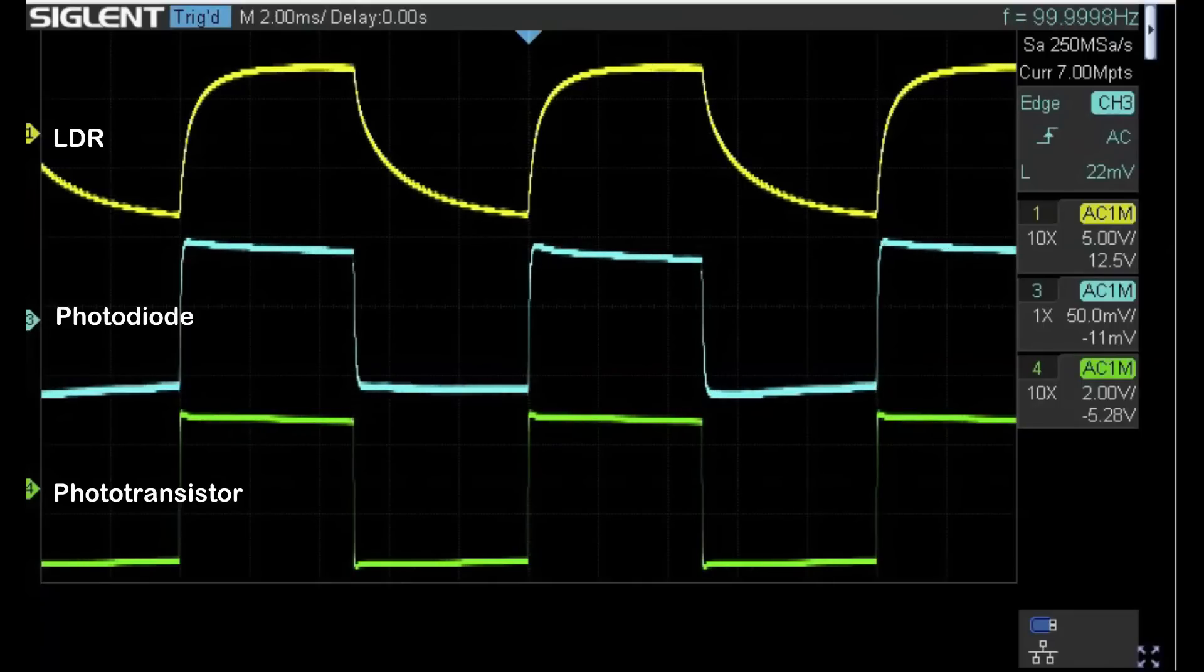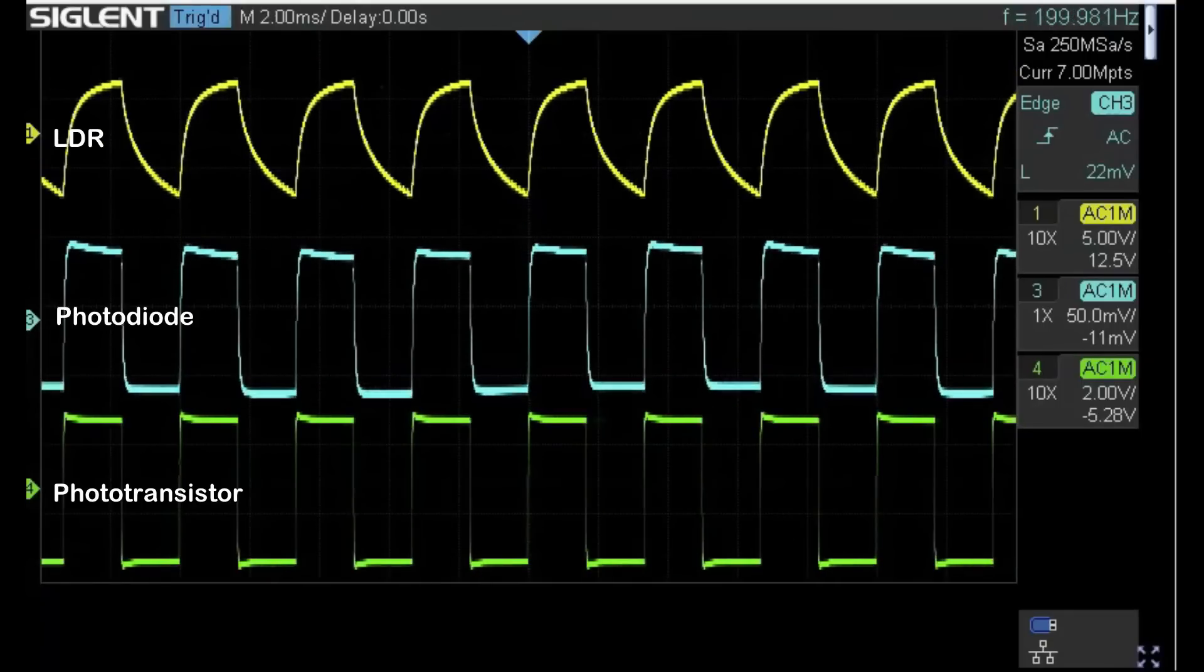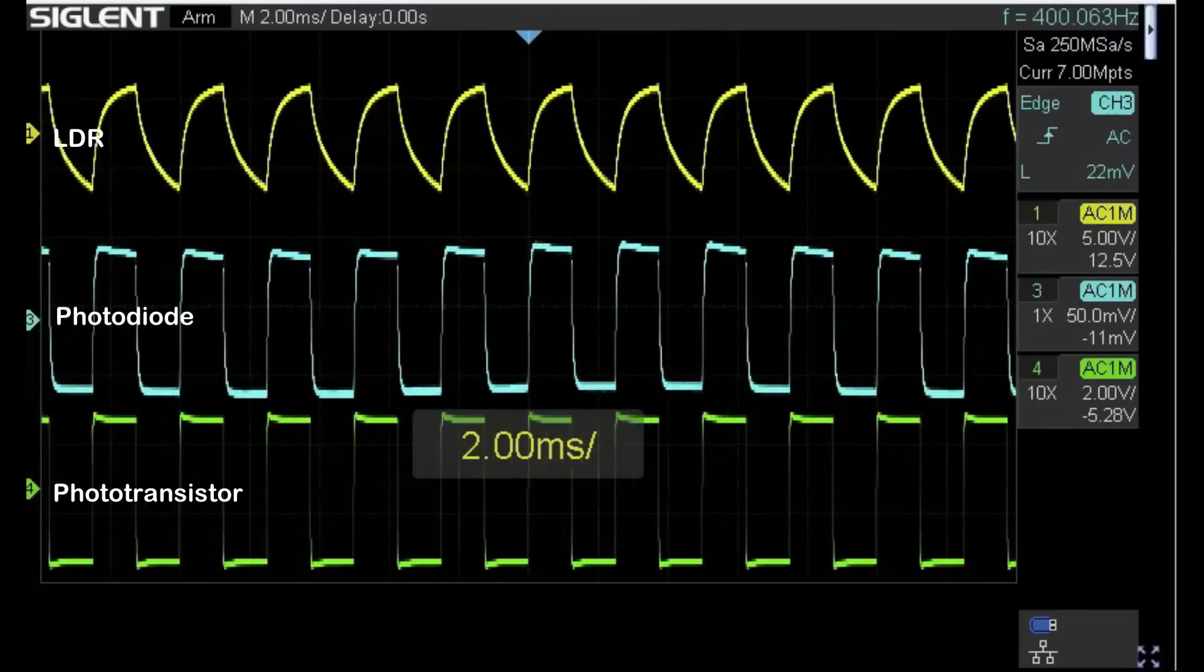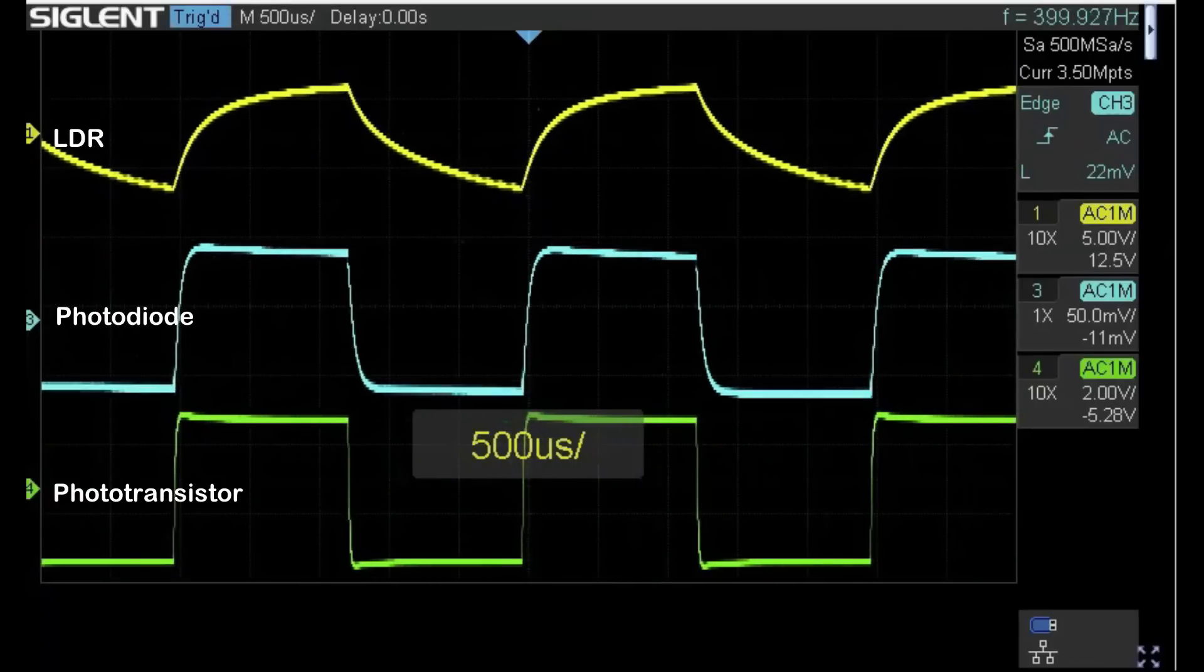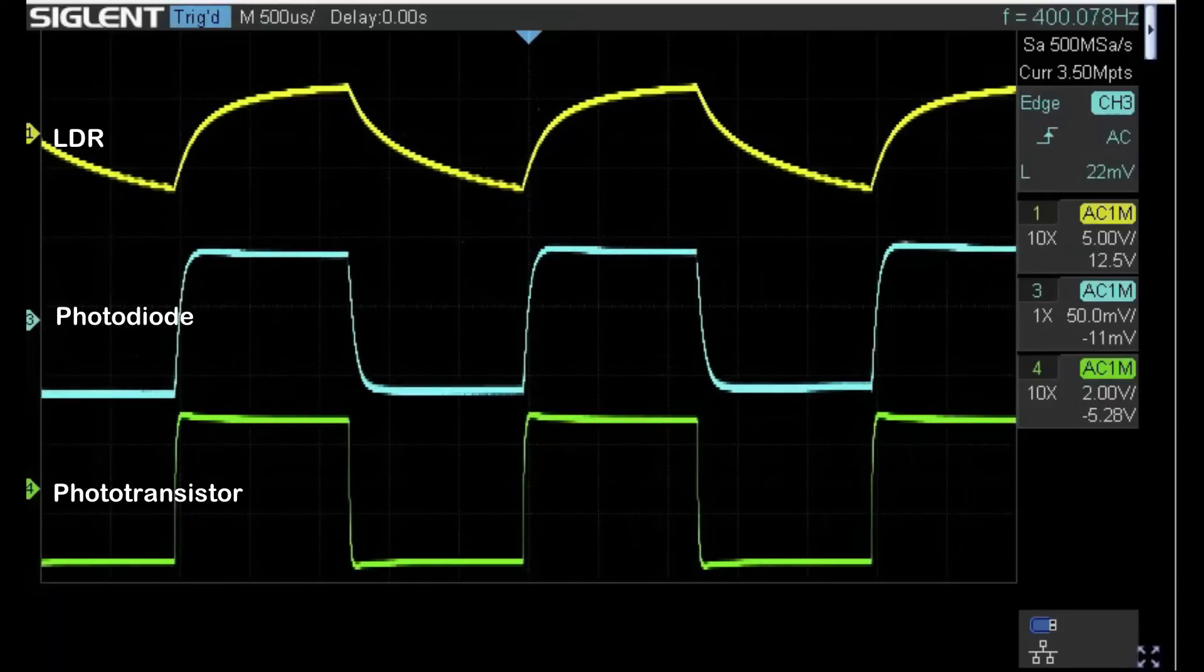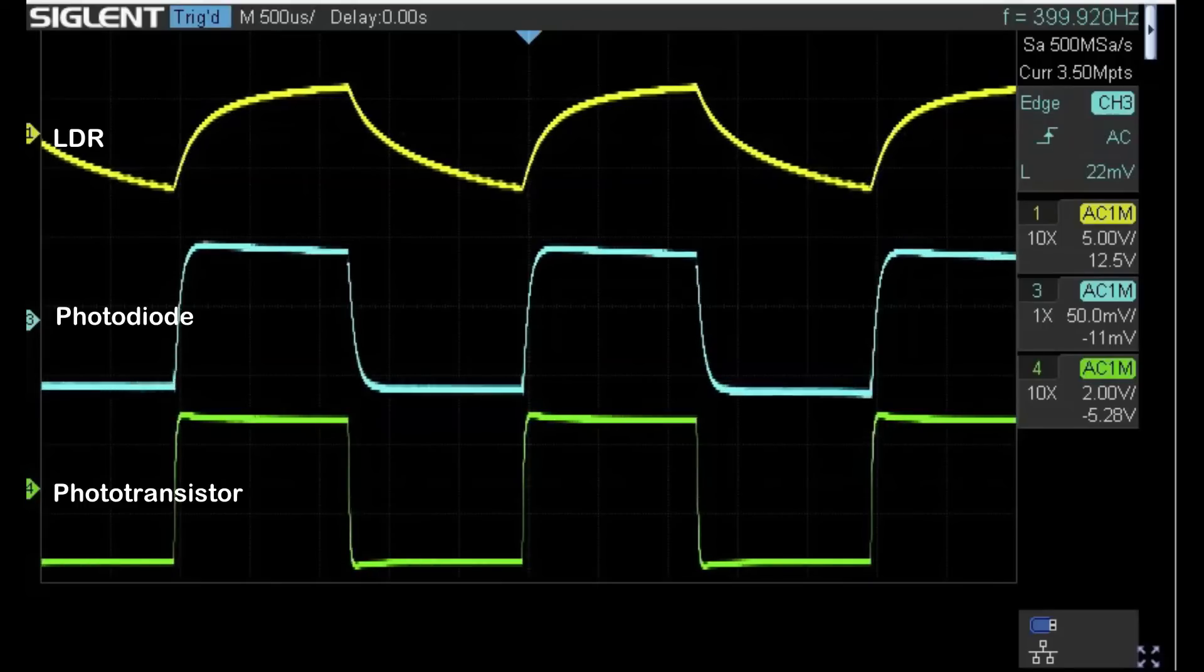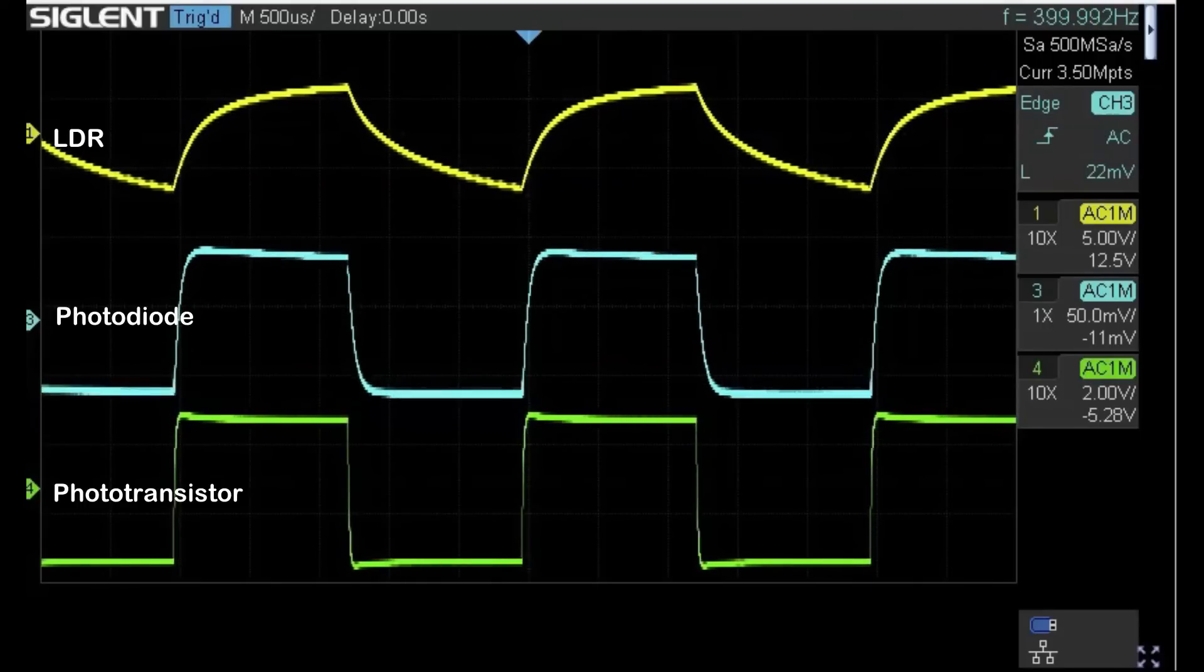I'm going to step up now to 400 hertz and adjust the time base so you can see the wave shape. The LDR is becoming increasingly more distorted, and we're starting to get a little change in shape from the photodiode, but the transistor still pretty much looks like a square wave, which is quite impressive.